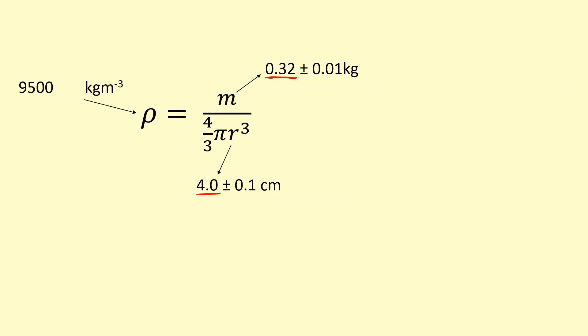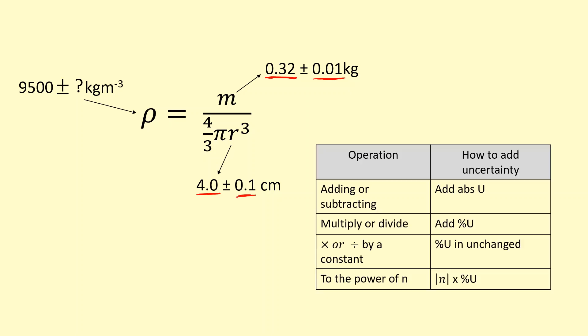What about the absolute uncertainty in this though? How do I figure that out, given using the 0.01 here and the 0.1 here? Well, there's a set of rules which we need to use. I'm going to go through them one by one.